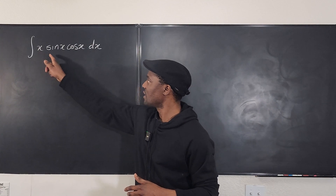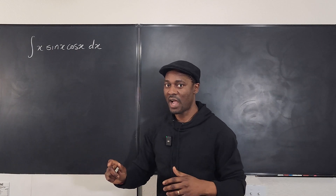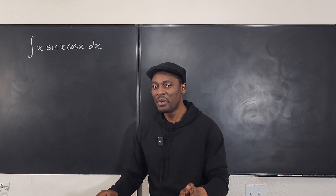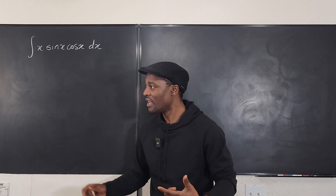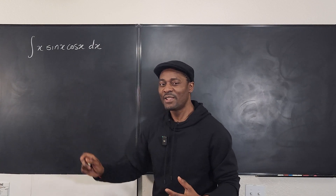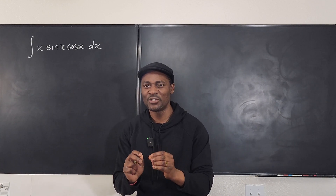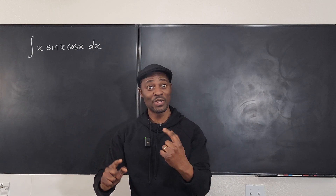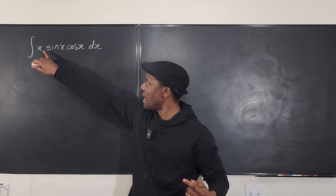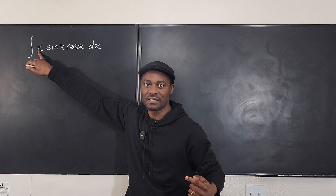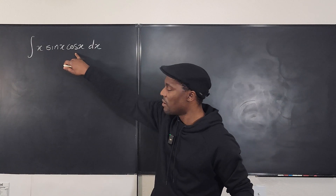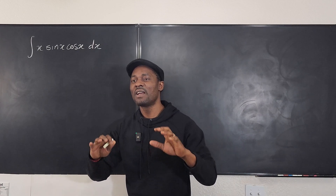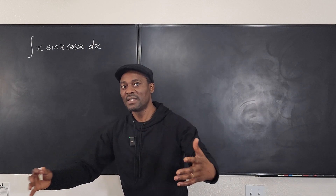Firstly, you're not used to integrating three functions. As you see: x, sin(x), cos(x) — you'd have to do two at a time. But when it involves trigonometric expressions like sine and cosine, there's always some manipulation you can do so that what was three functions becomes two or even one. We may not be able to modify the x, but can we combine sine and cosine? The answer is yes.